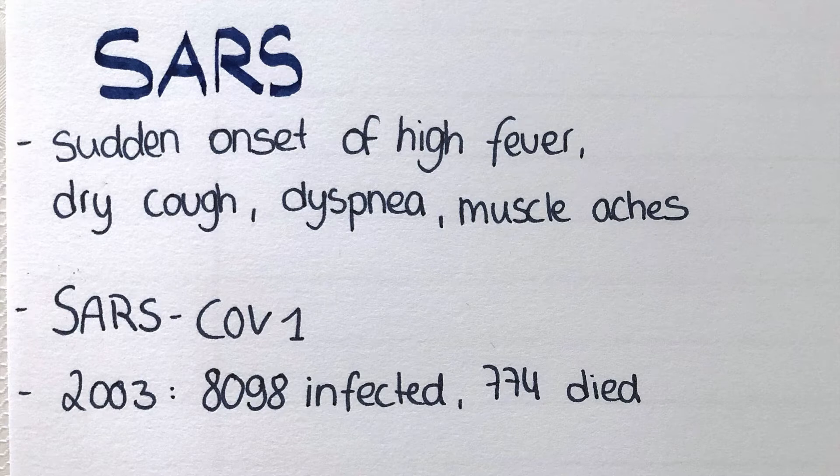SARS is a type of atypical pneumonia presenting with a sudden onset of high fever over 38 degrees, dry cough, dyspnea, chills and shivering, and muscle aches.